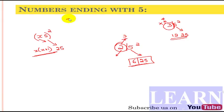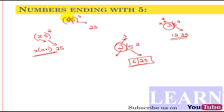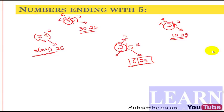Next, 55 squared. First divide into two parts: the 5 gives us 25. The first part is 5, and we multiply with the next digit, which is 6. 5 times 6 is 30. So 55 squared is 3025.